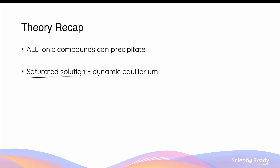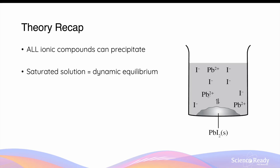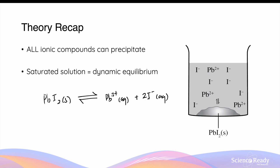In the context of equilibrium, when you form a saturated solution for an ionic compound, a dynamic equilibrium exists between the dissolved ions and the undissolved precipitate. For example, when you add enough lead iodide to water to the point where a precipitate forms, this is a saturated solution of lead iodide. The lead iodide solid is in dynamic equilibrium with its dissolved ions — lead ions and iodide ions. The forward and reverse reaction rates are equal, so the total quantity of precipitate and dissolved ions remains constant over time.